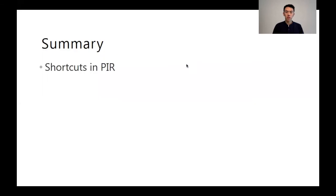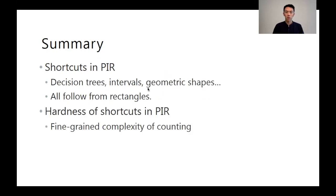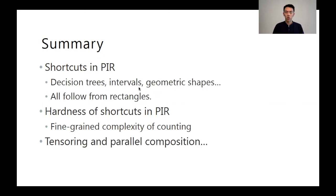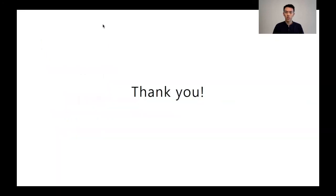To summarize, we studied the notion of shortcuts in PIR and showed that they are possible in the Reed-Muller setting for several useful function families. These results are clean and all follow from a single shortcut for rectangles. When we move to harder functions or more complicated schemes, the fine-grained complexity of counting comes into play. The hardness arises for different reasons but can both be based on the SETH or the ETH. We also propose tensoring and parallel composition in order to obtain shortcuts. For more concrete complexity comparisons and extensions, please refer to the paper. Thank you for joining our presentation.